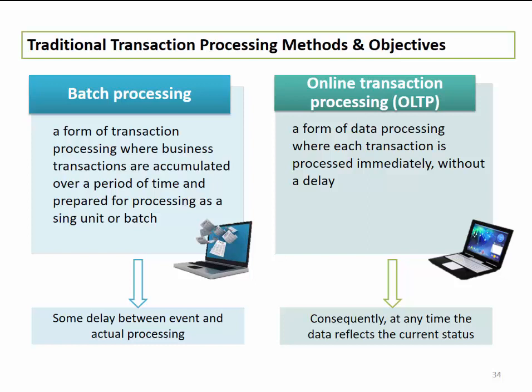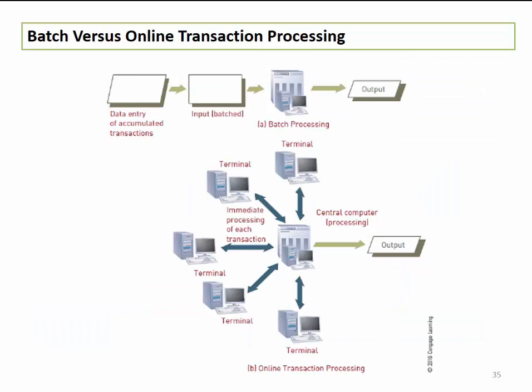On the other side we have OLTP, or online transaction processing, which is what we nowadays face. This is a form of data processing where each transaction is processed immediately without any delay — once a transaction is submitted, that information reflects throughout the whole system. An example of batch processing might be bank checks, where companies accumulate checks and then deposit them all at the end of the week. An online transaction processing system, by contrast, would process purchases immediately and generate outputs when required.